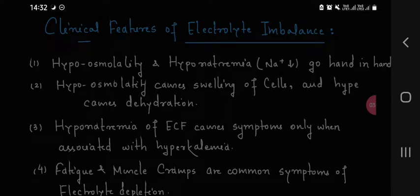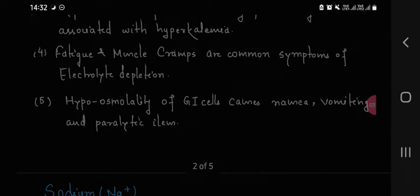Hyposmolality causes swelling of cells and hyponatremia and dehydration. Hypoosmolality of GI cells causes nausea, vomiting and paralytic ileus.